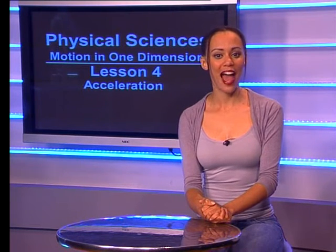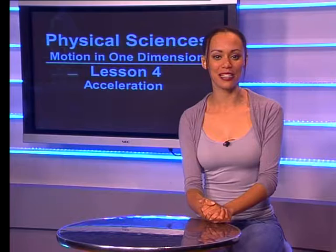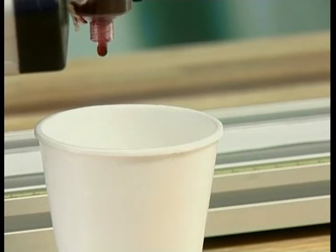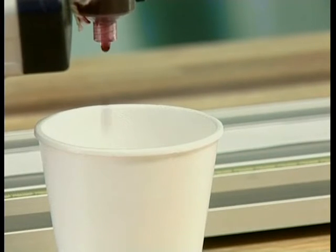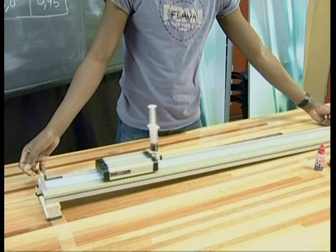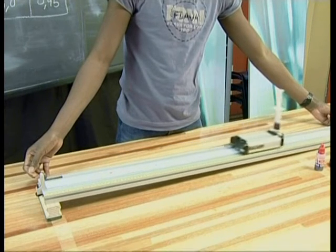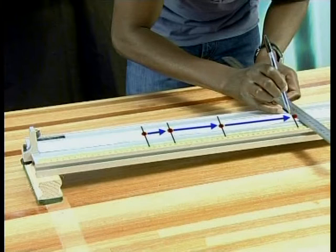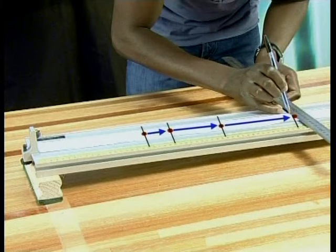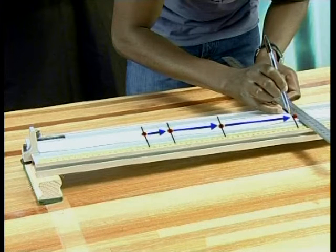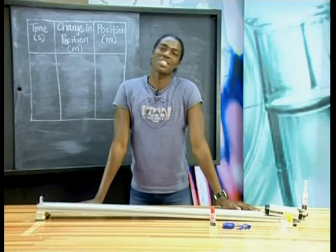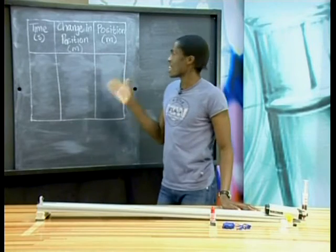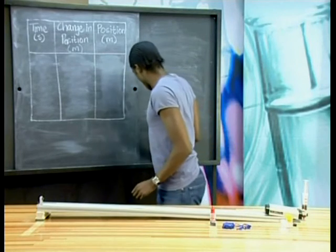Let's go back to Aaron now and see how he completes his experiment. Let's adjust it to drop ink spots every half a second. The trolley runs down the hill, leaving a more frequent trail of ink spots behind it. The gap between each pair of ink spots represents the displacement of the trolley in half a second. Notice that the displacement between the spots increases each time interval. We can build up a table of results of time, position, and displacement.